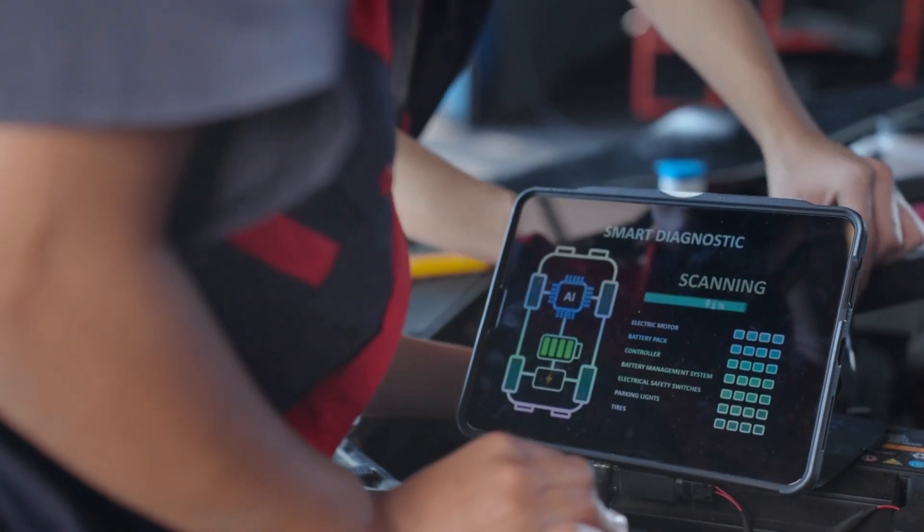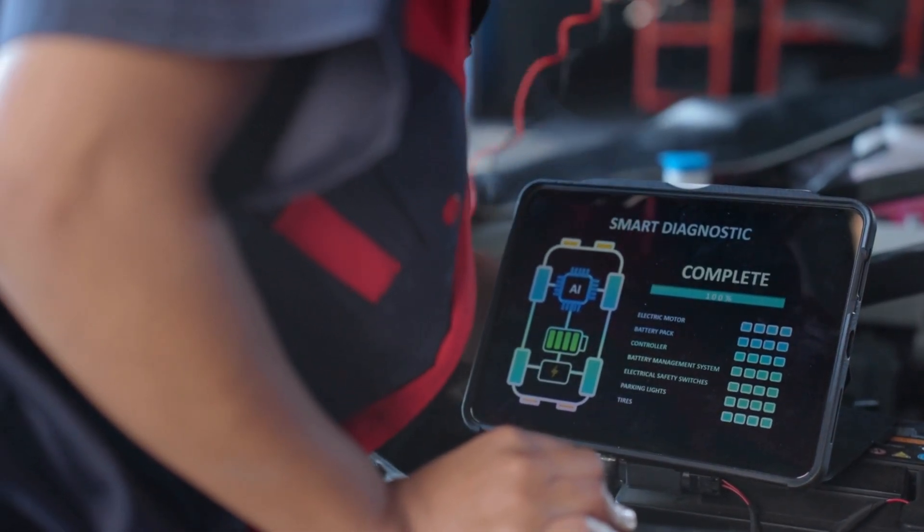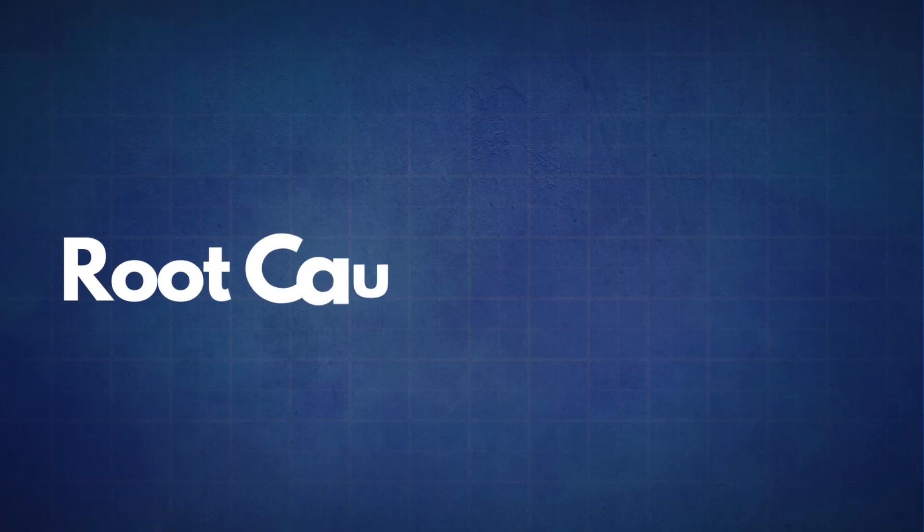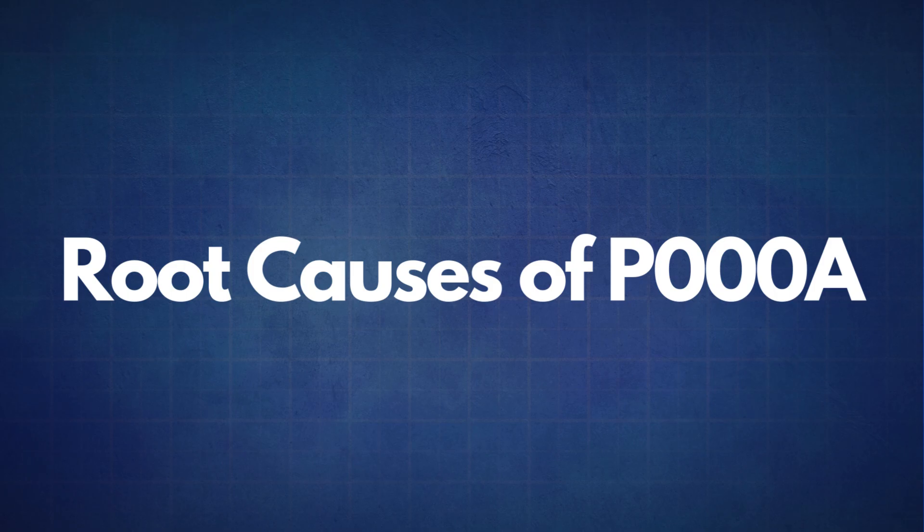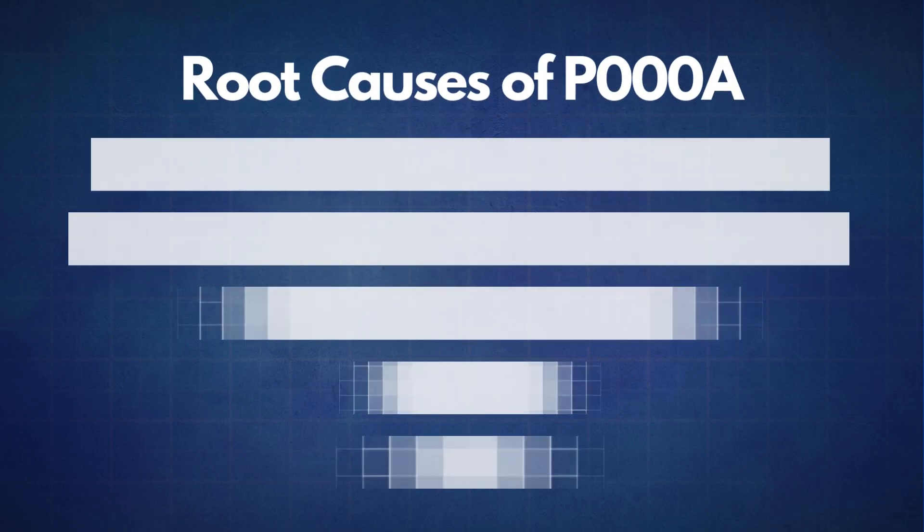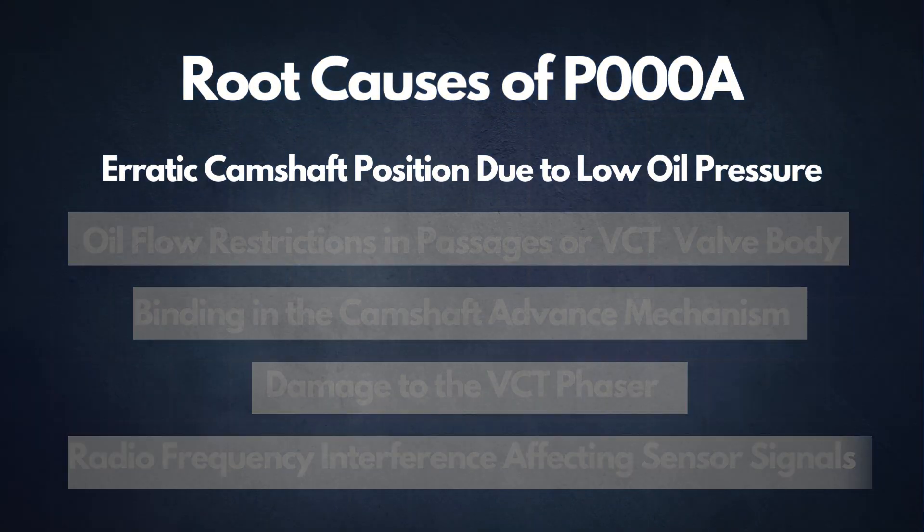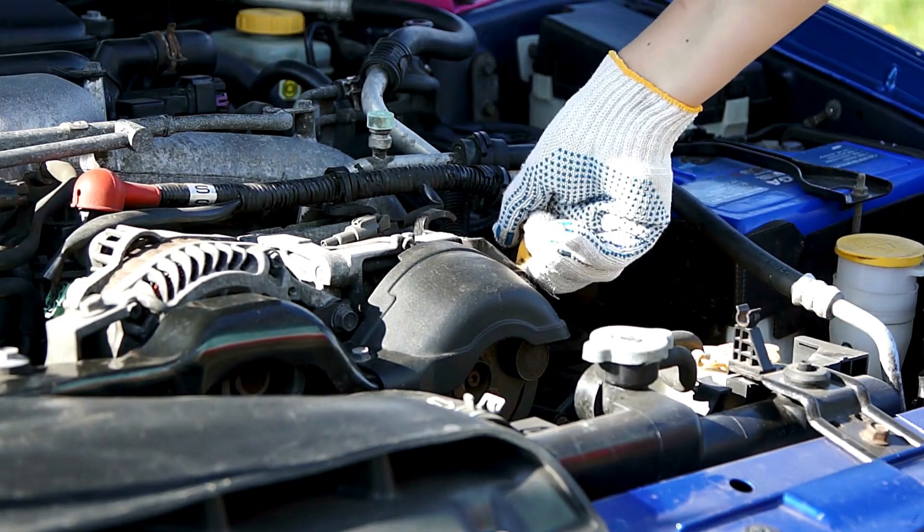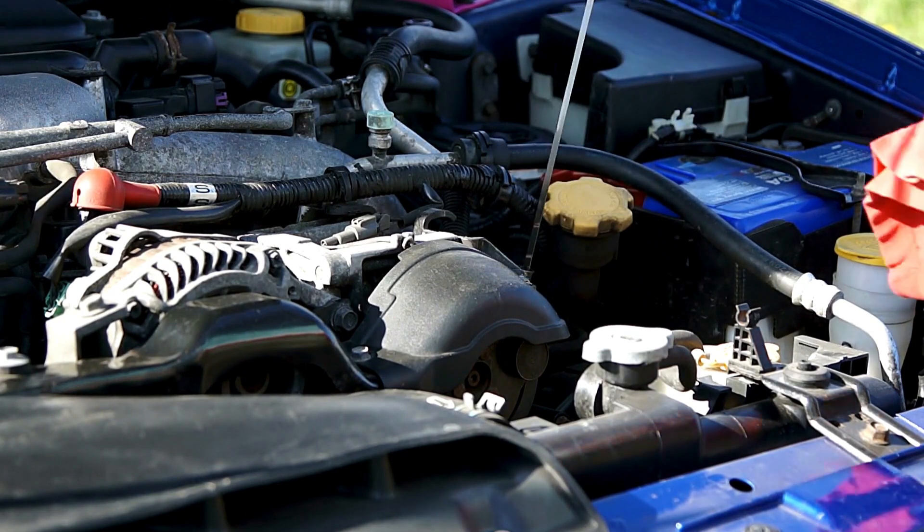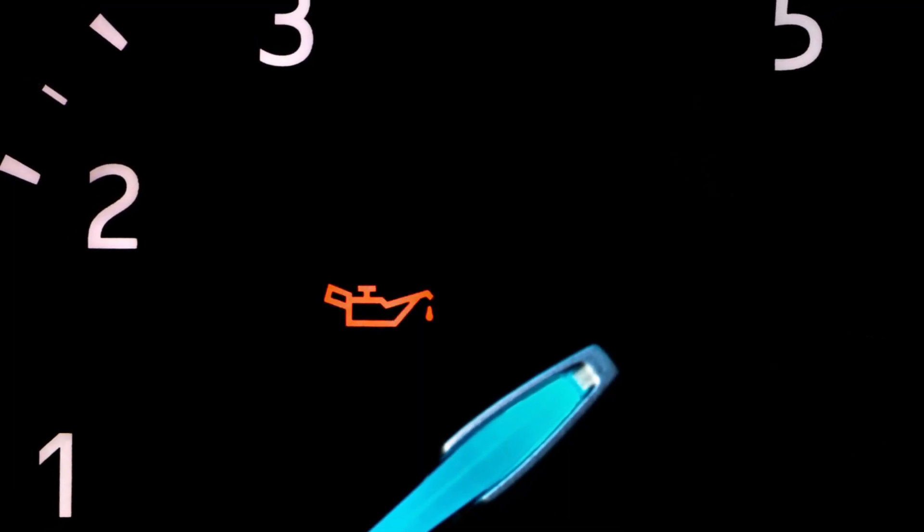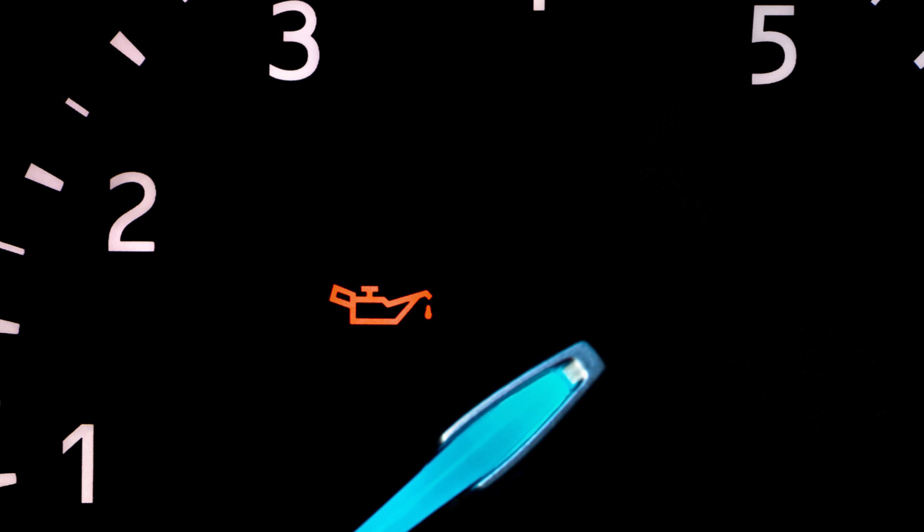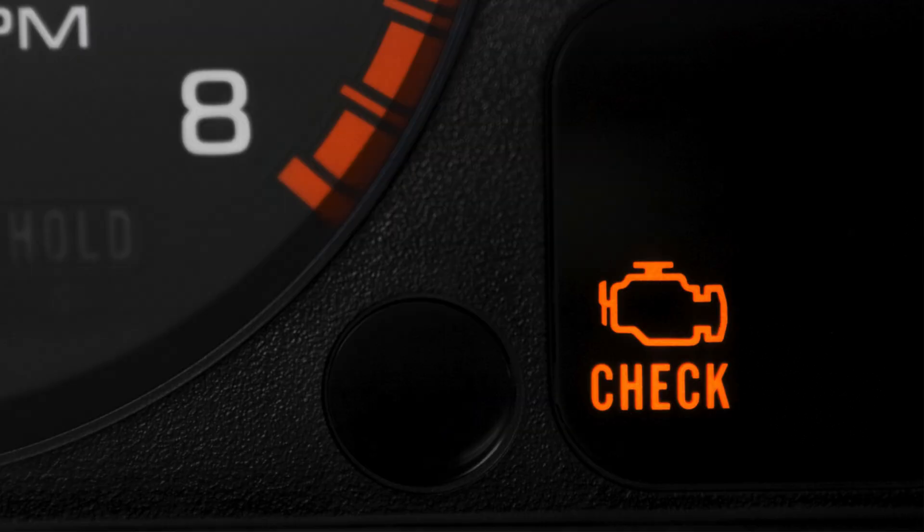If the P000A code reappears, it's time to look into common root causes. The first cause is erratic camshaft position due to low oil pressure. Your camshaft's timing depends heavily on proper oil pressure. If the pressure is low, it can disrupt the camshaft's alignment, leading to the P000A code.